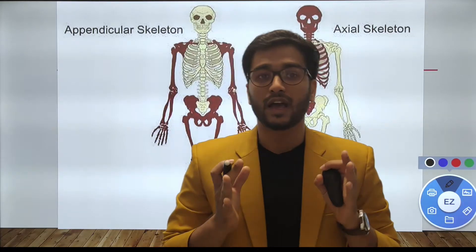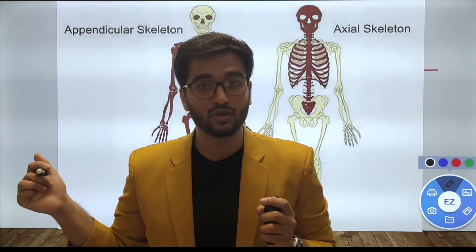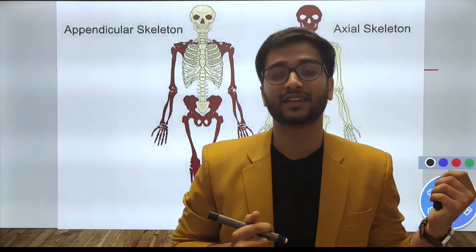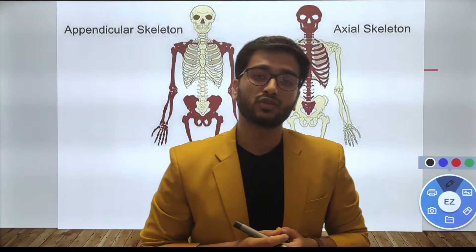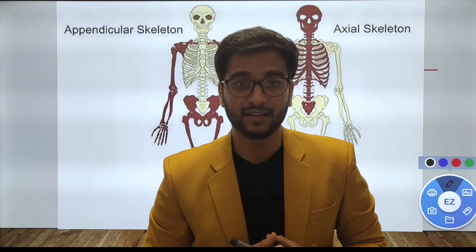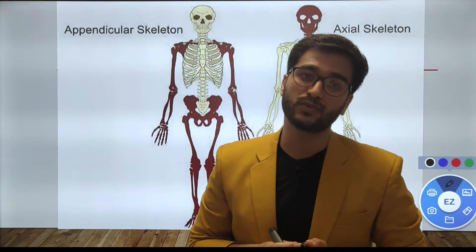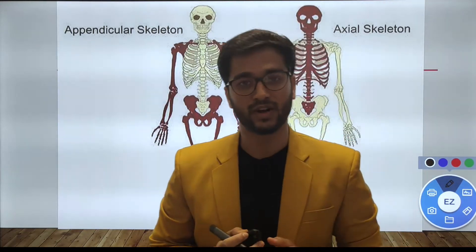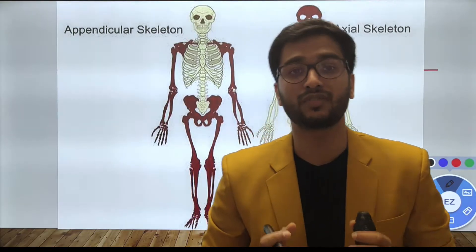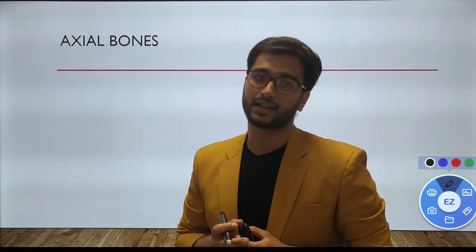The appendicular bone system comprises around 126 bones, where the axial skeleton comprises 80 bones. The axial skeleton includes the bones of the head, the ribs, the sternum, the hyoid bone, and the vertebrae, where the appendicular skeleton comprises the bones of the limbs. Let's look at the axial skeleton first.